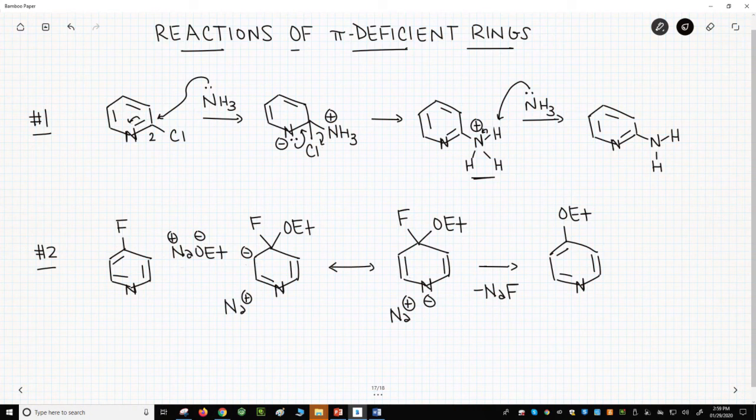The bottom reaction shows 4-fluoropyridine reacting with sodium ethoxide. This reaction looks different because the ring nitrogen is not directly next to the halide.